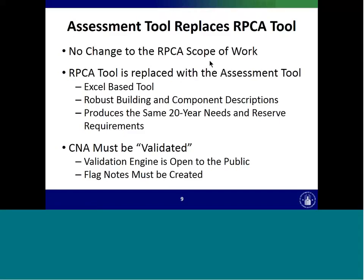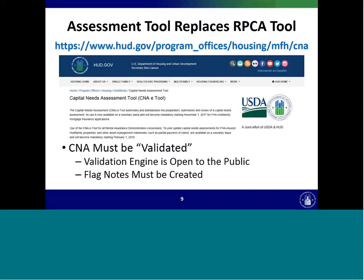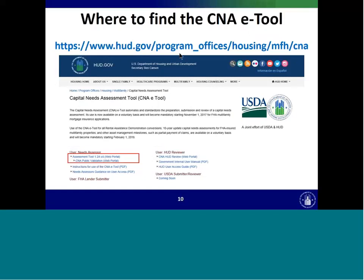We're hopeful the validation engine will help both PHAs and RAD transaction managers by eliminating common issues — for example, estimated useful life tables that are sometimes manipulated outside what a transaction manager is comfortable with. In the new CNA eTool, those changes are much more visible. Now let's look at what resources are out there. There are a lot of training resources on the HUD.gov CNA eTool landing page. If you Google 'CNA eTool,' the first result is the landing page. Please direct content questions to the Q&A function during this webinar.